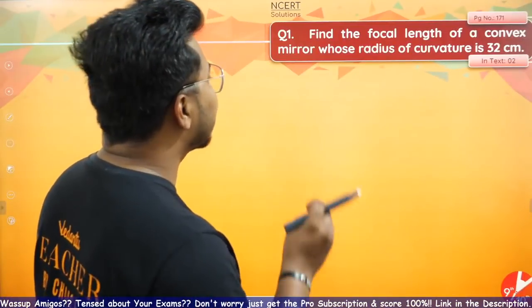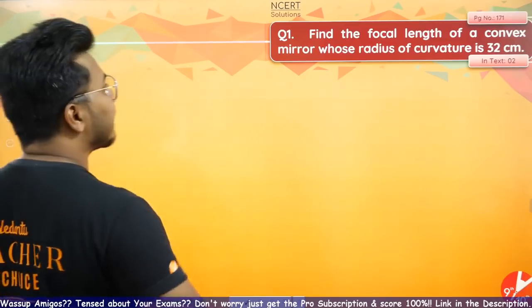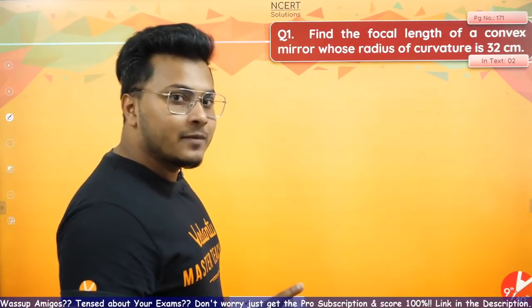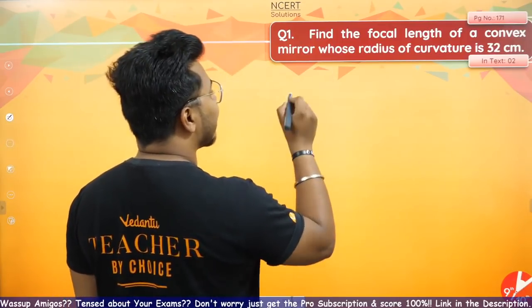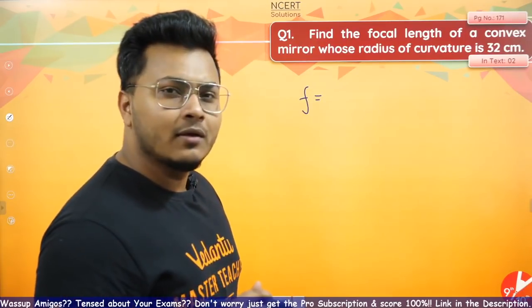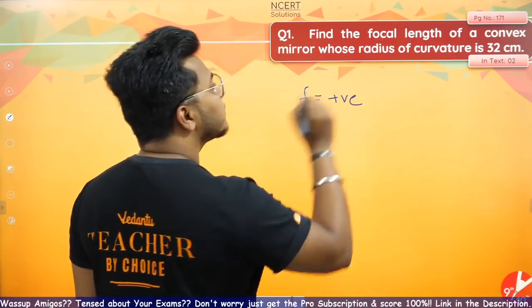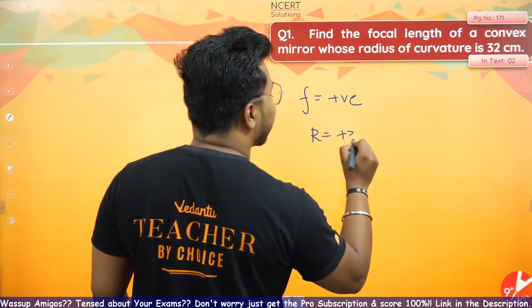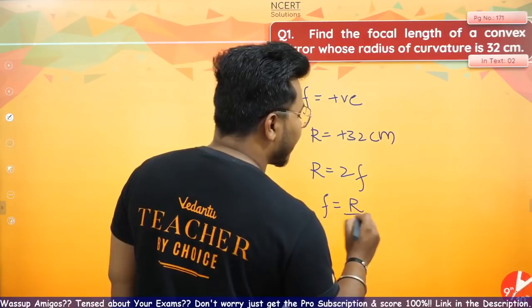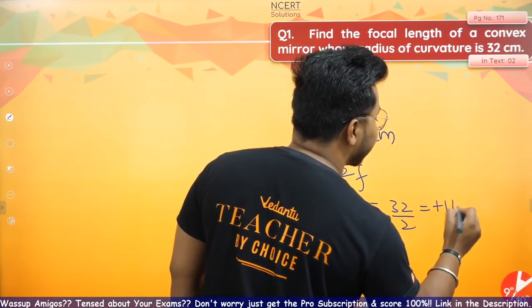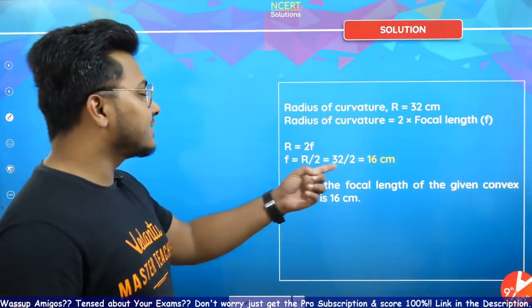Let's get down to question one. It's a very simple question: find the focal length of a convex mirror whose radius of curvature is 32 cm. The radius of curvature is given as positive 32 cm. The formula is R equals 2f, so focal length equals R upon 2, which is 32 divided by 2, equal to positive 16 cm. That is the correct answer.